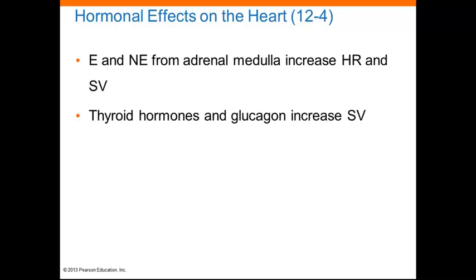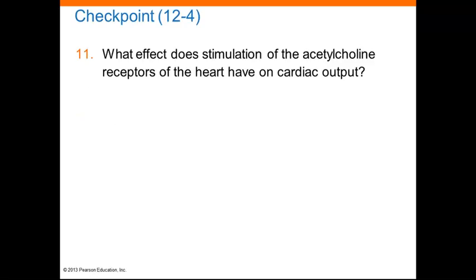Epinephrine and norepinephrine from the adrenal medulla increase heart rate and stroke volume. Thyroid hormones and glucagon can also increase stroke volume from the heart. That concludes the lecture on Chapter 12 of the Heart.